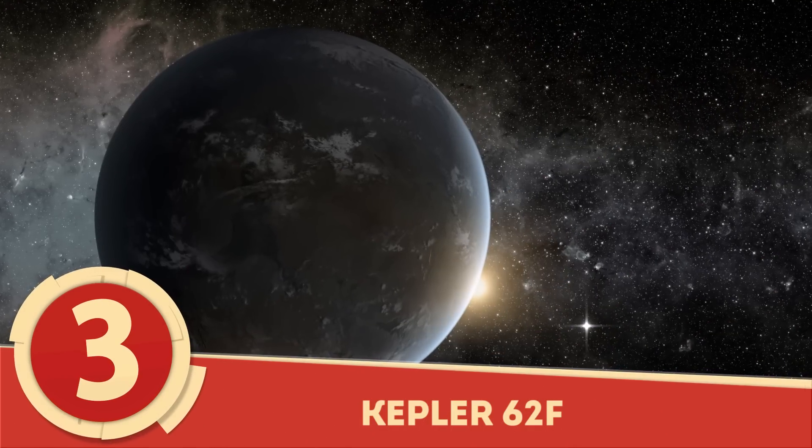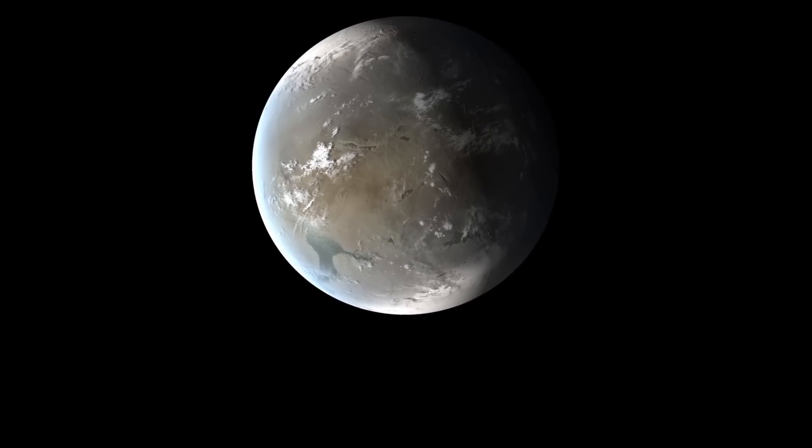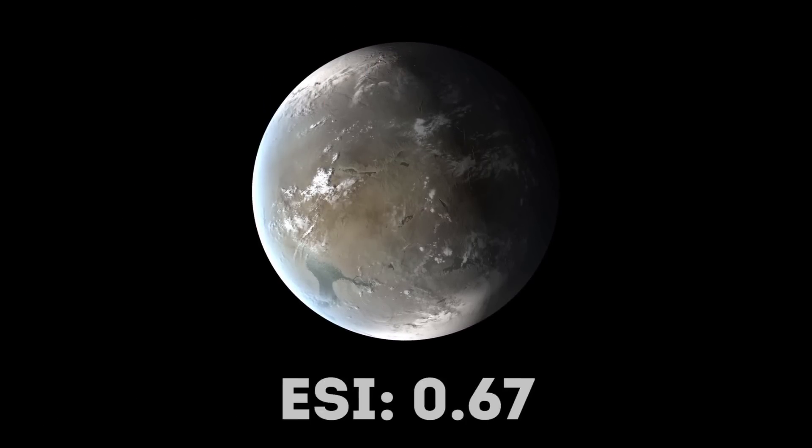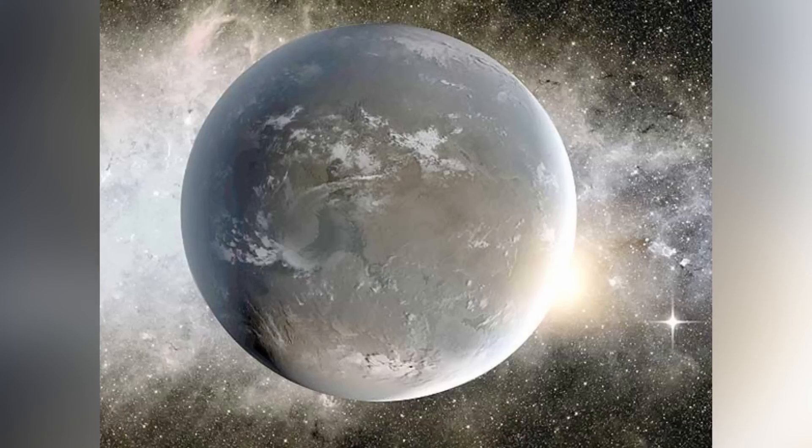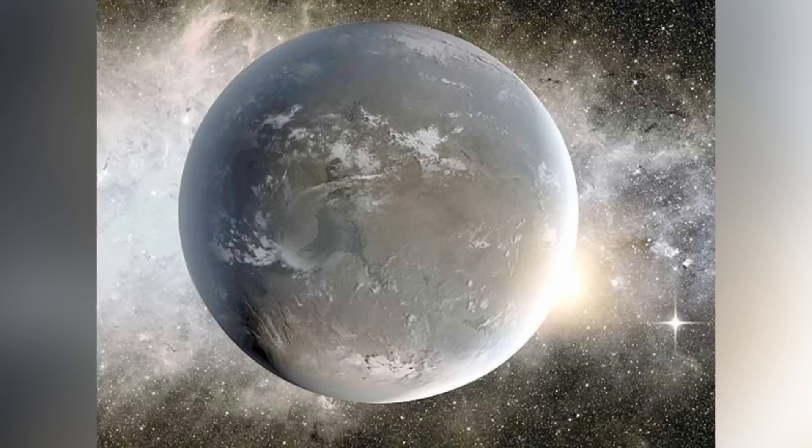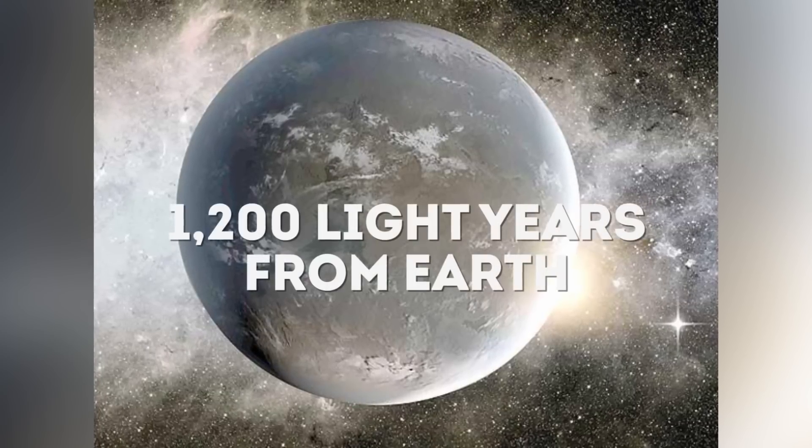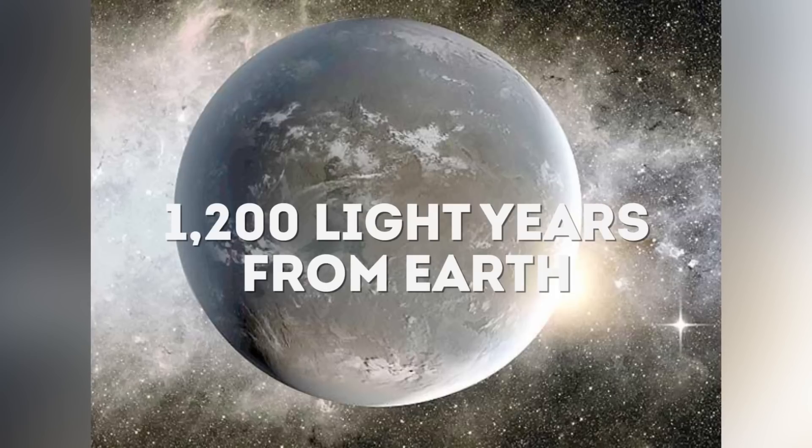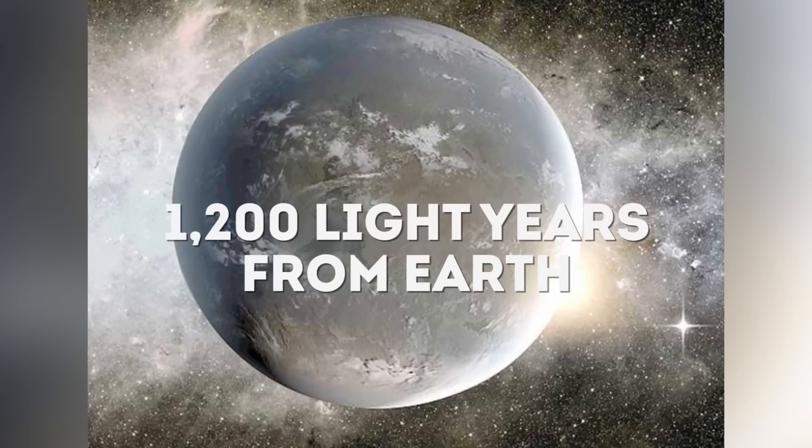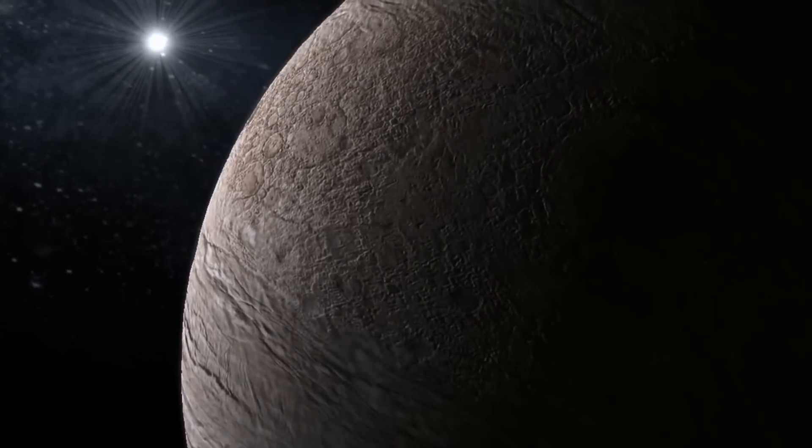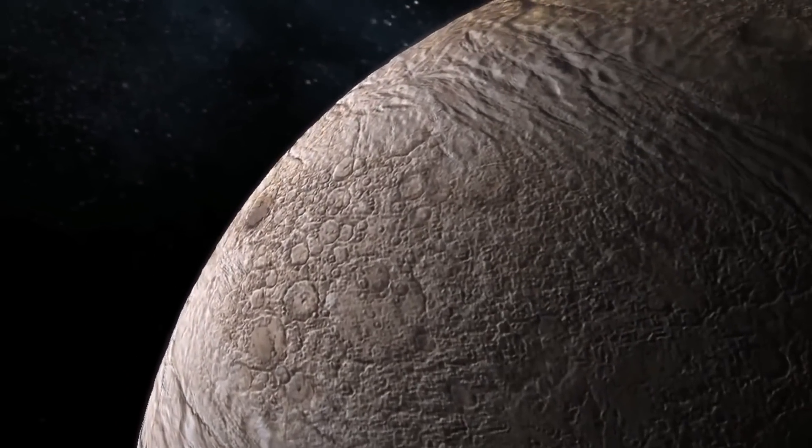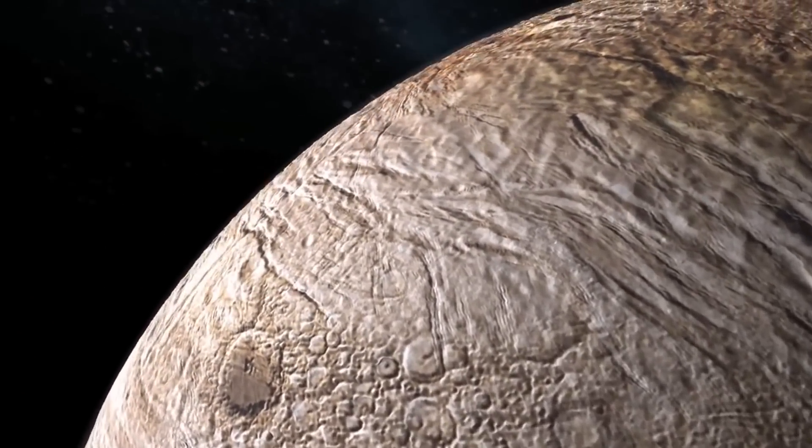Number 3: Kepler-62f. Kepler-62f may only have an ESI of 0.67, but this super-Earth, discovered at the same time as 62e at about 1200 light-years away from Earth, poses one of the best scenarios for habitability. Where the exoplanet may fall short in its ability to sustain life is its possible lack of an atmosphere, which would lead to any surface water to be ice.